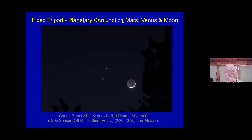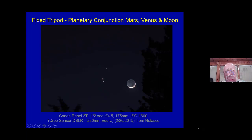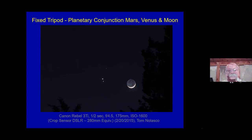Planetary conjunctions are excellent fixed-tripod targets. Here's a triple conjunction with Mars in the center, Venus just below it, and the moon — these happen quite a bit throughout the year. Unlike meteor showers requiring dark skies or auroras which are rare at mid-latitudes, planetary conjunctions happen many times a year in various combinations and can be photographed from anywhere.